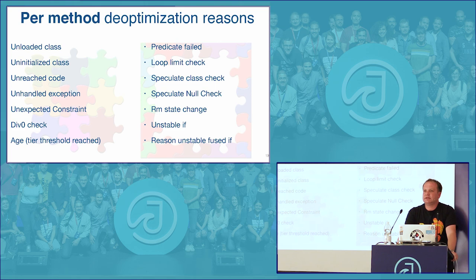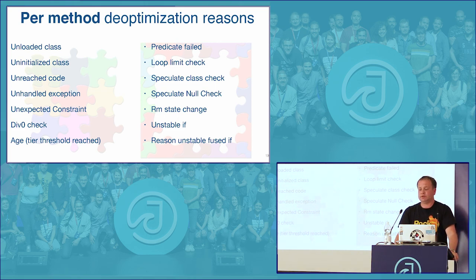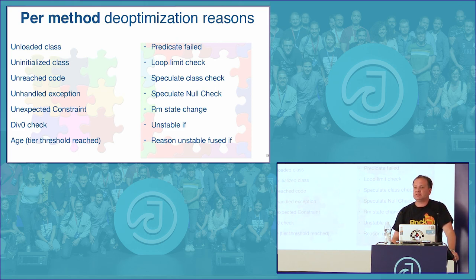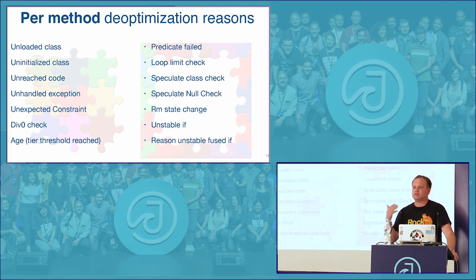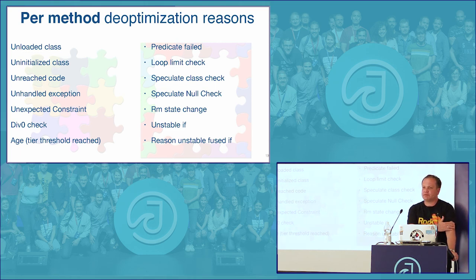When any of those checks fail, the runtime records it in the code profile and will not make the same kind of mistake when recompiling that code. However, it will not repeat the mistake only during the same run. If you run the same application tomorrow, it would start with a blank new code profile and likely hit the same pitfalls and traps again. A logical question is: is there a way to persist this information so the compiler doesn't repeat these mistakes on the following run?